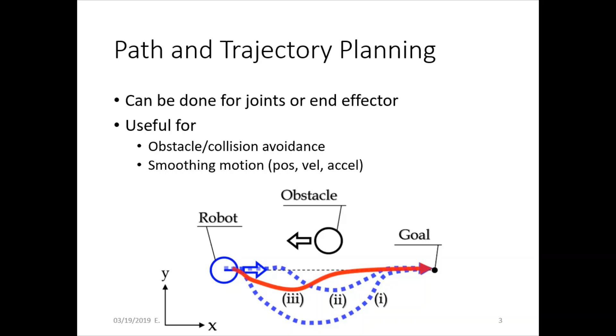Typically, this is done for either the joints or the end effector because you want to make the robot avoid some kind of obstacle. Whether that's lifting up an object to go over a barrier and set it down somewhere on the other side, or if there are just other things in the way.